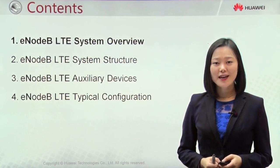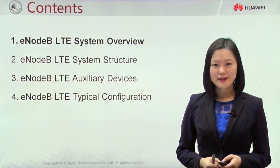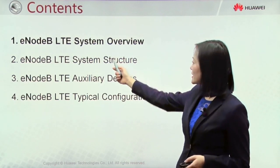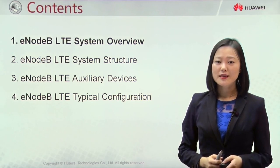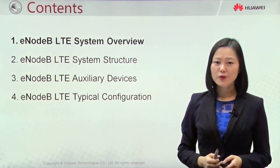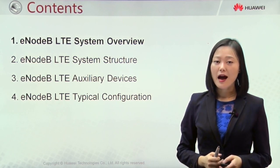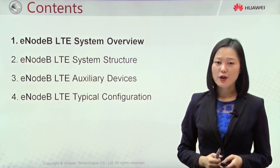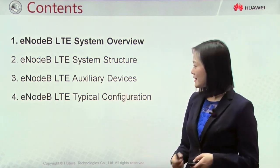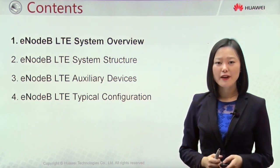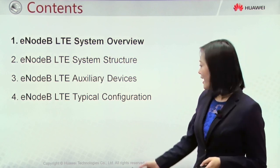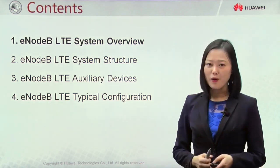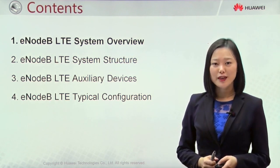Our course will be divided into four chapters. The first is E0B LTE system overview. The second is E0B LTE system structure, which will introduce two main components — BBU and RFU — covering the hardware structure and logical structure. The third part is about auxiliary devices, mainly the different types of cabinets used in E0B products. And the last chapter will give some examples for typical configuration of E0B.